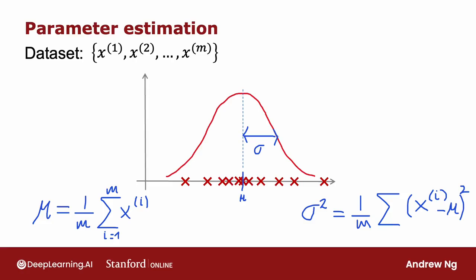If you've taken an advanced statistics class, you may have heard that these formulas for mu and sigma squared are technically called the maximum likelihood estimates. Some statistics classes will tell you to use the formula 1 over m minus 1 instead of 1 over m. In practice, using 1 over m or 1 over m minus 1 makes very little difference.